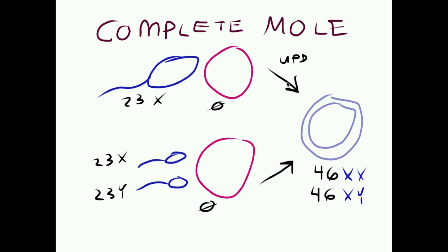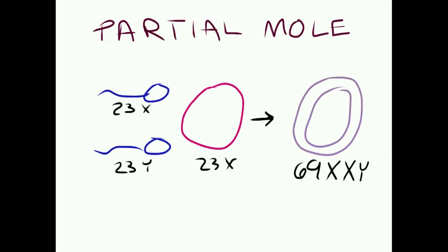Contrasting this to a partial mole: what you have here is dispermic fertilization of an egg that does have maternal genetic material, and in this case we have a triploid embryo.